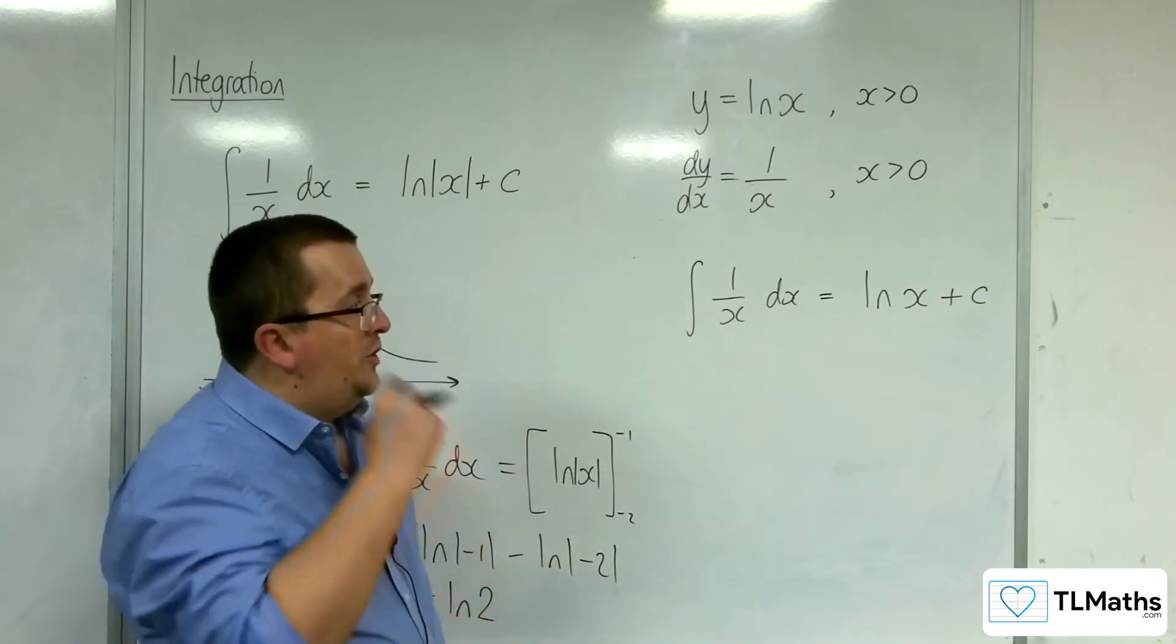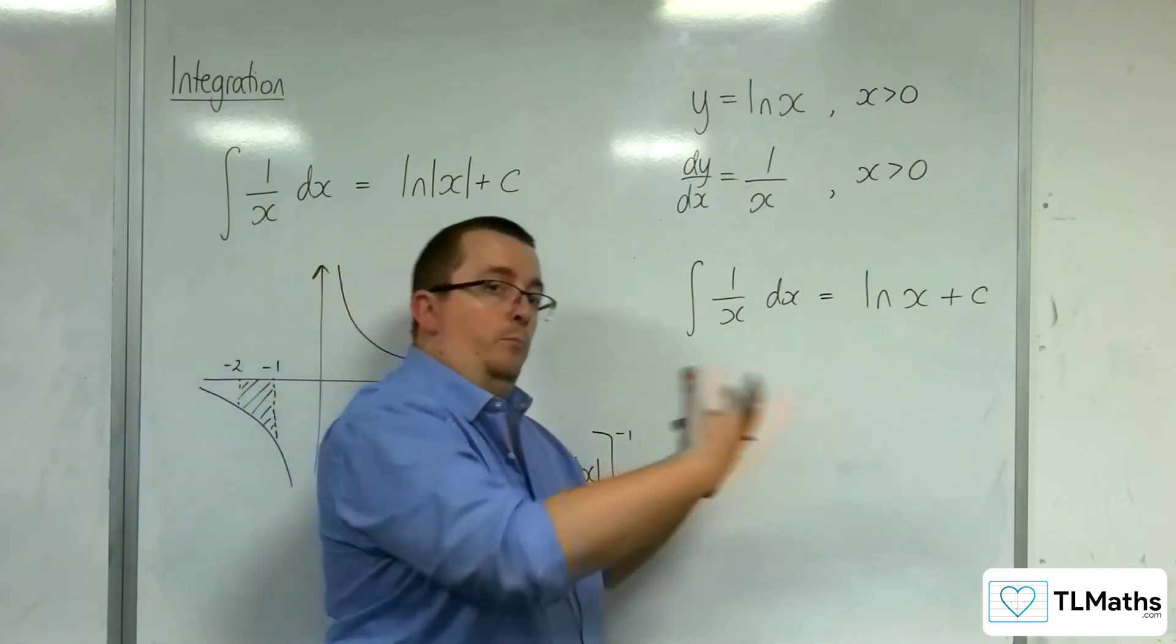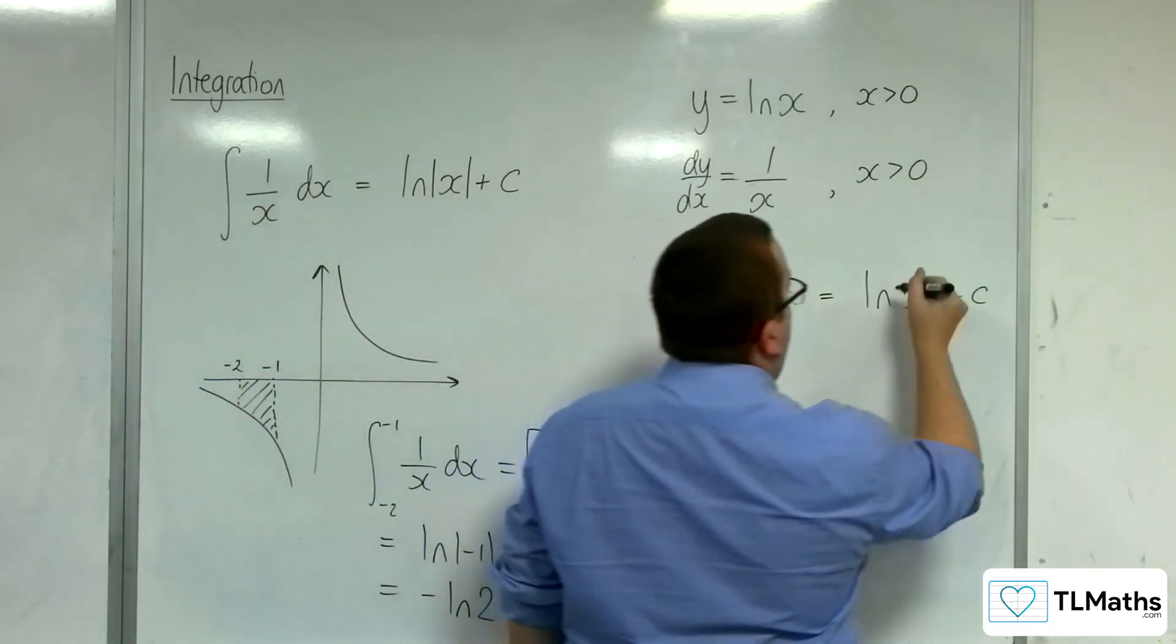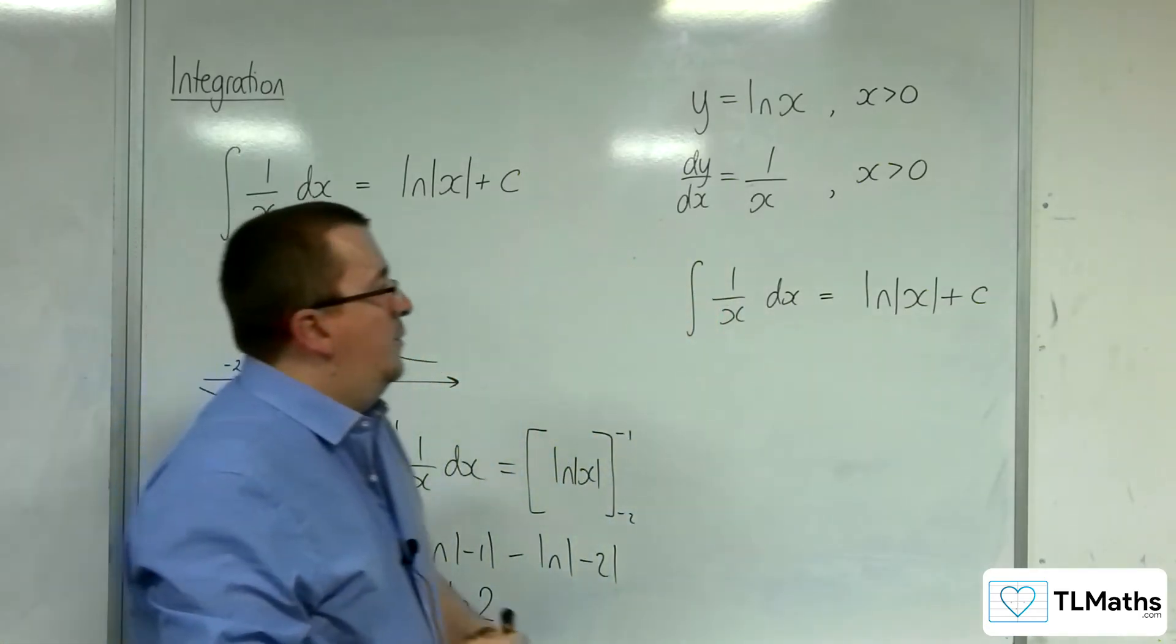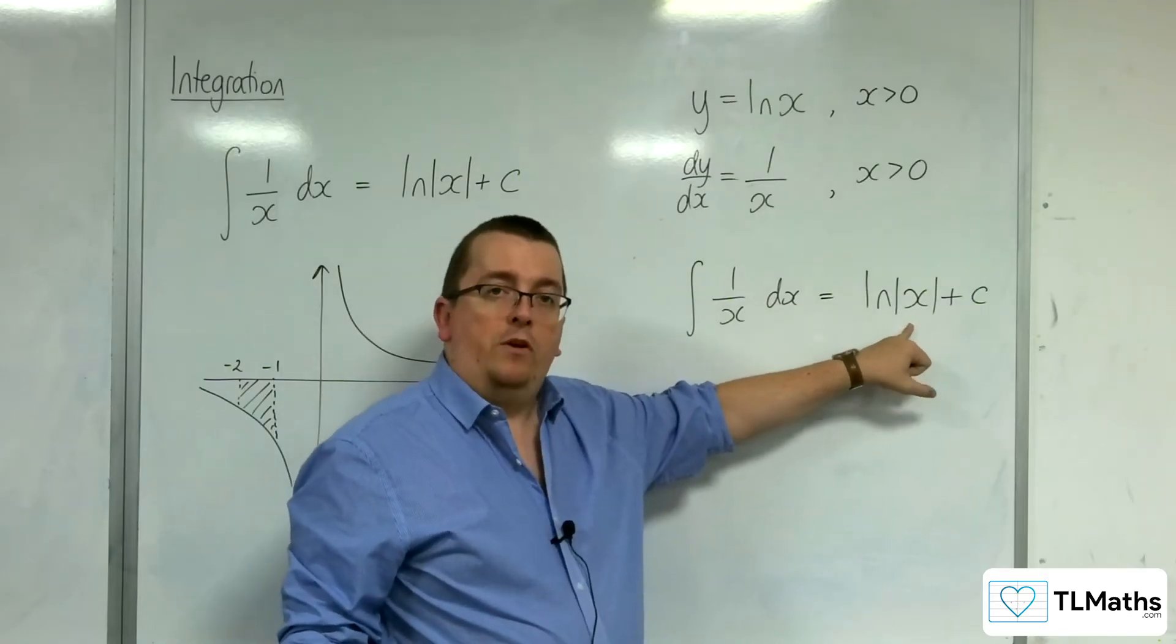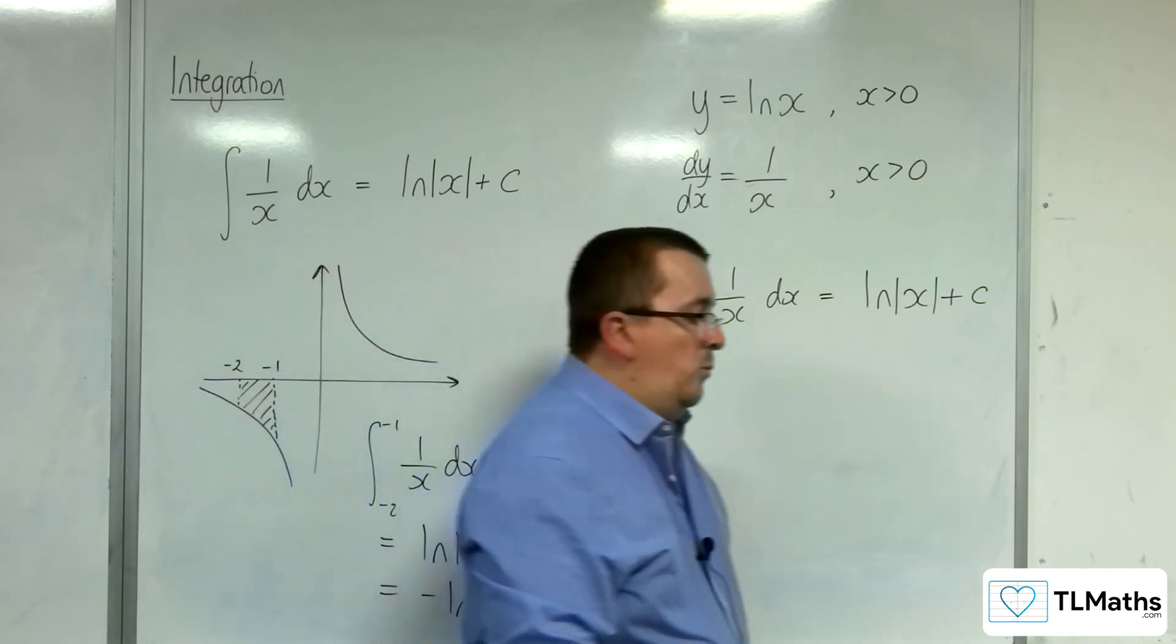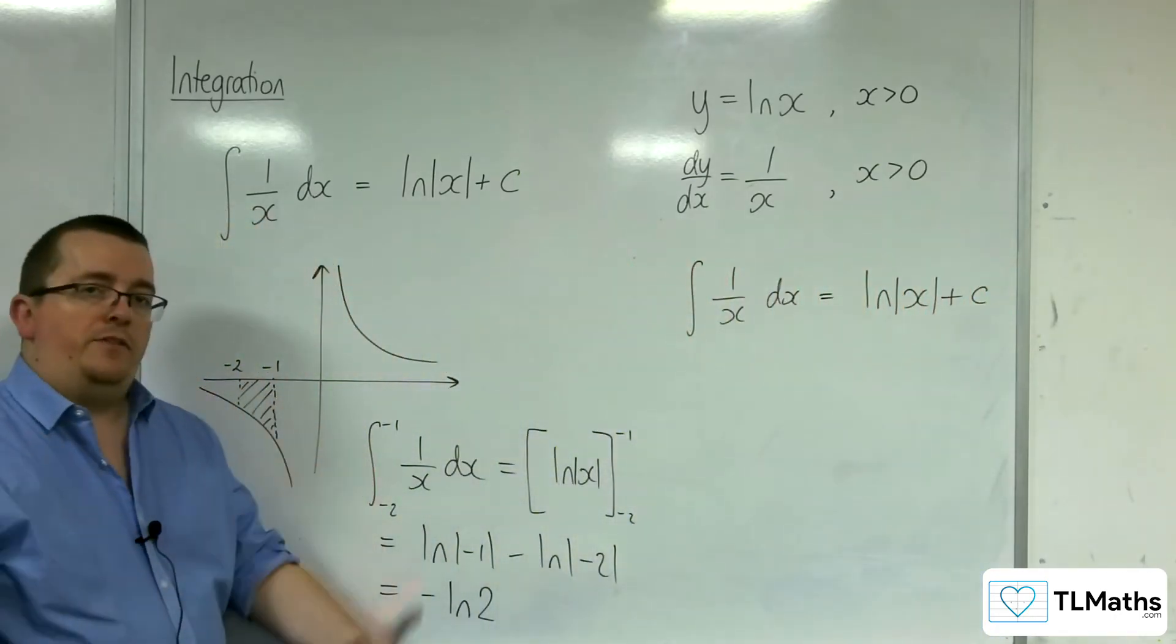So in order for the domain to be put through or to develop through this equation so that the left-hand side domain is the same as the right, that's where these modular signs come from. Now the domain of this is any real value apart from 0, which is exactly the same domain as the left-hand side. So the reason why the modular signs appear is in order to maintain the domain of the function.